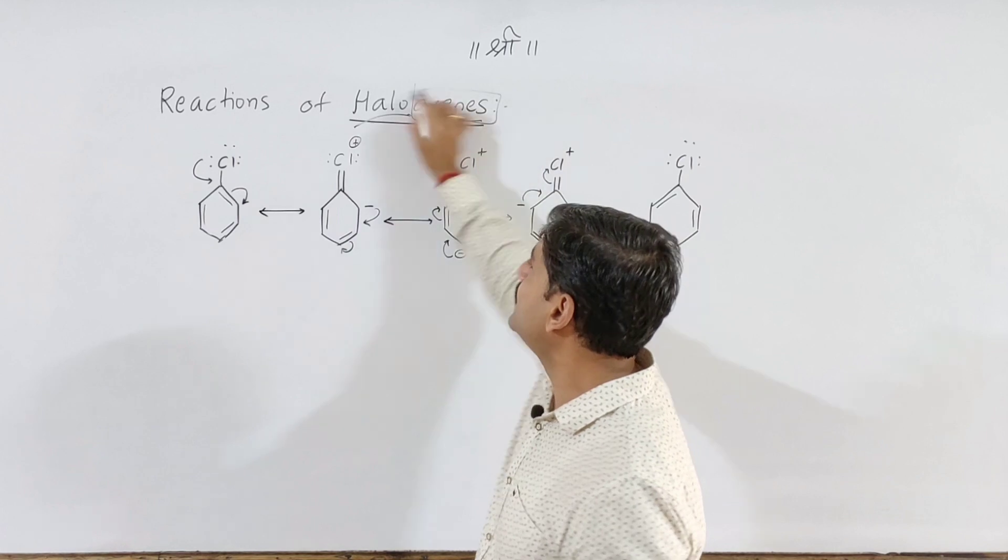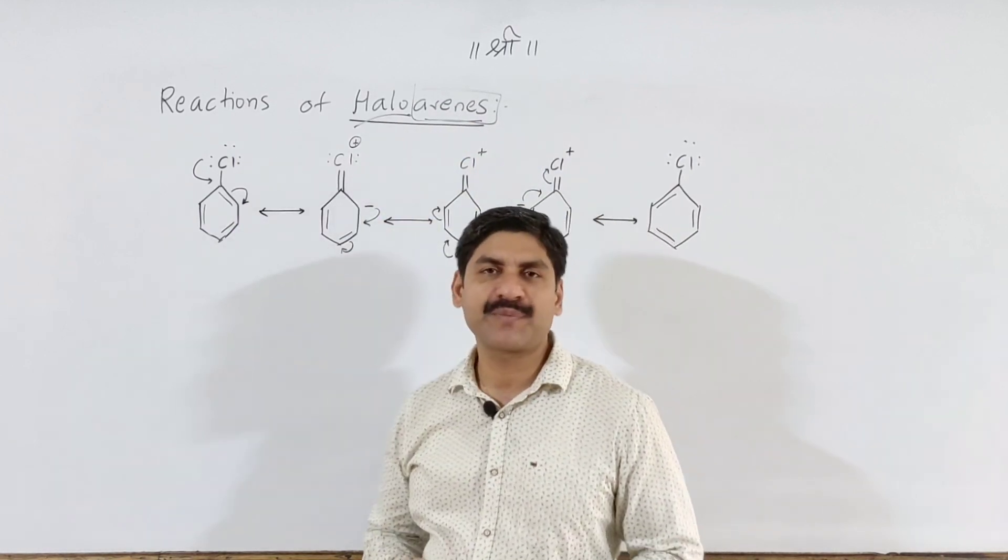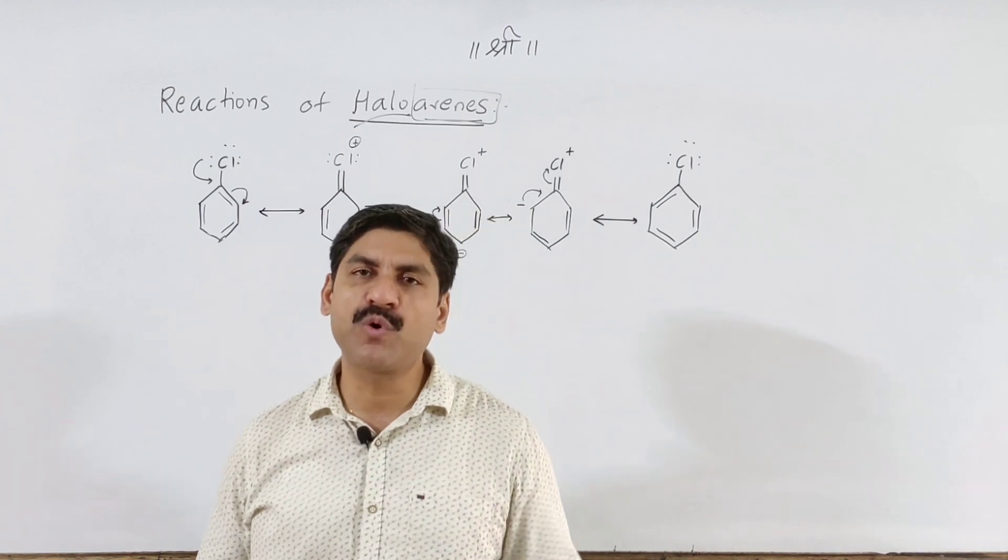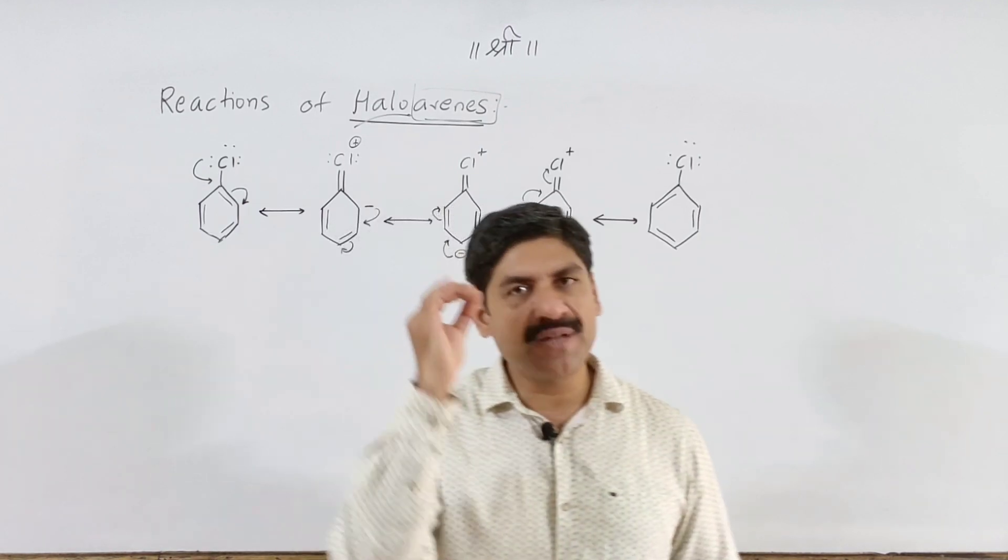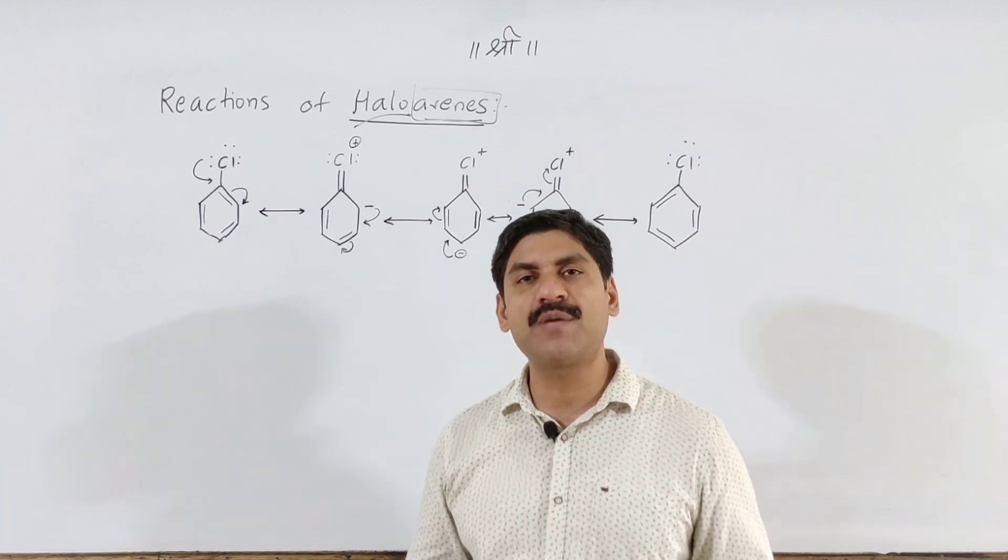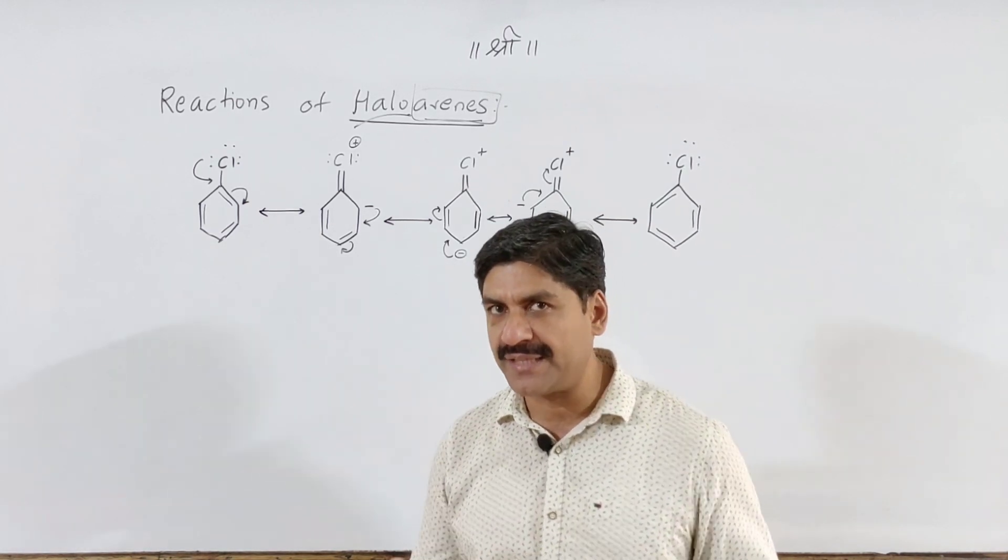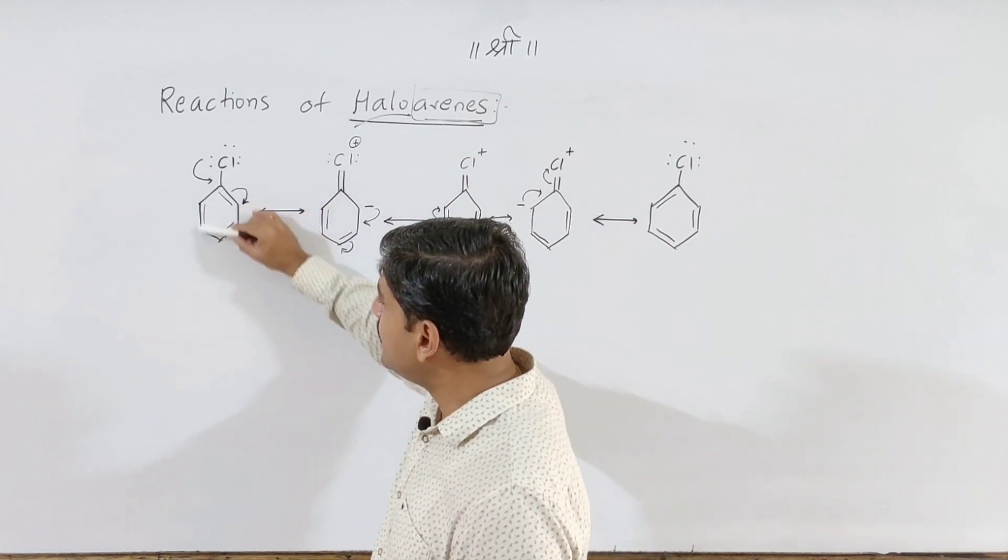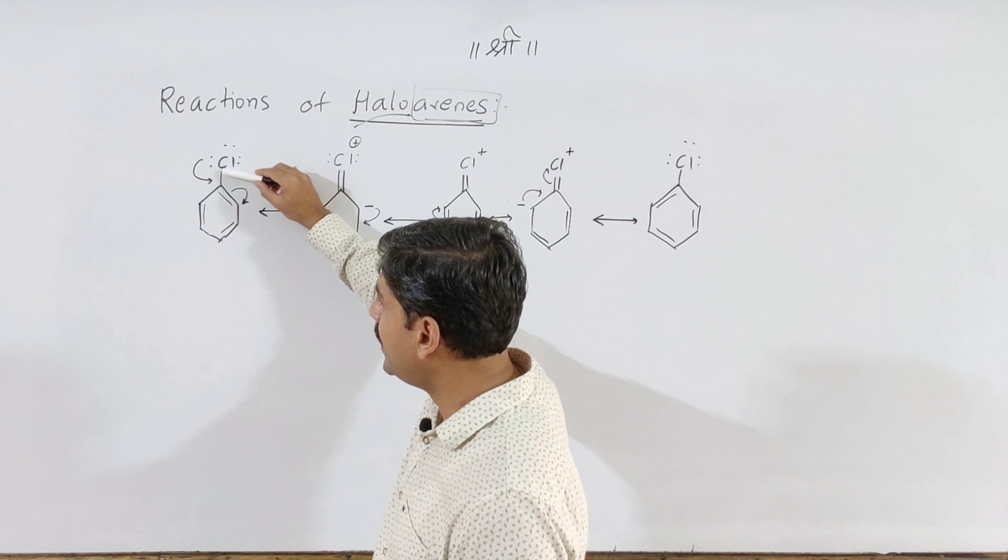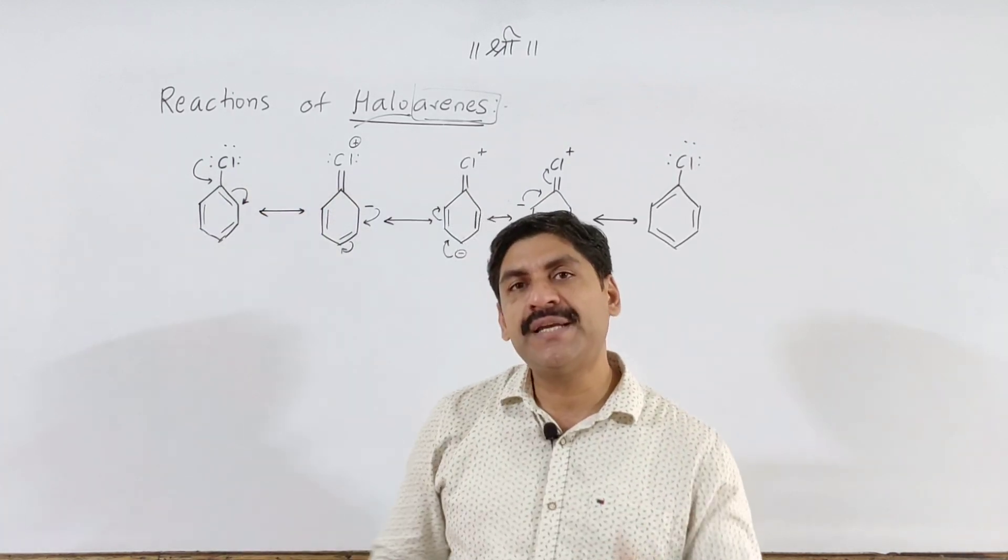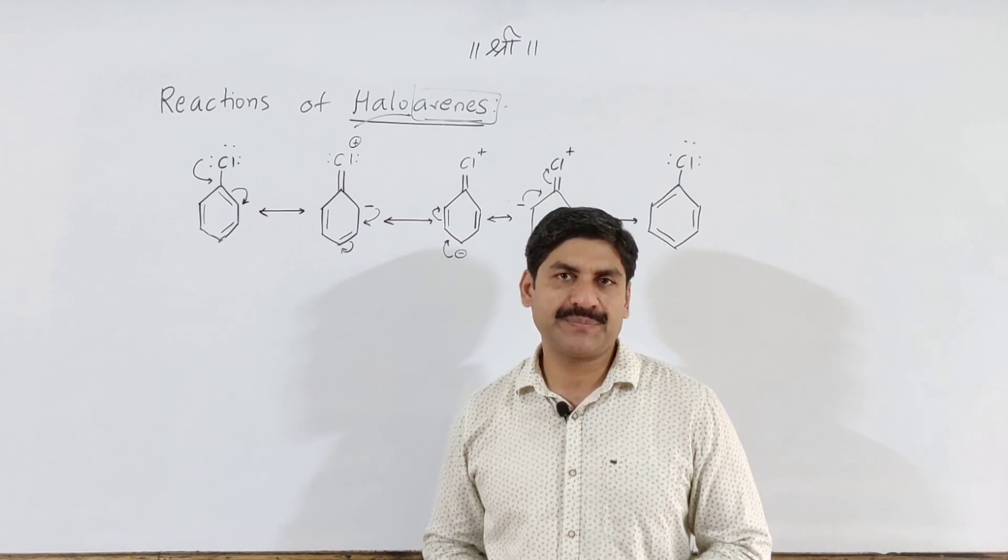What are haloarnes? Haloarnes means aryl group with halogens - fluorine, chlorine, bromine, iodine. We do not consider fluorine reactions as they are explosive and uncontrollable. In haloarnes, we have this benzene ring, this halogen, and this C-X bond. The nature of this bond is important.